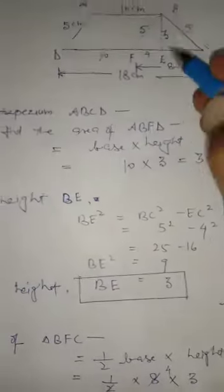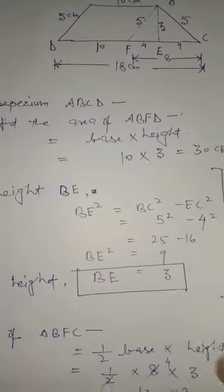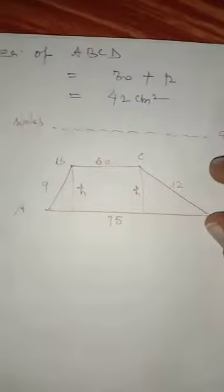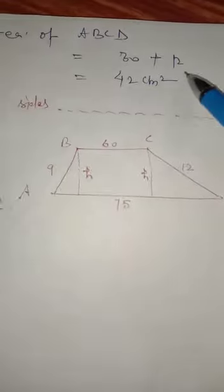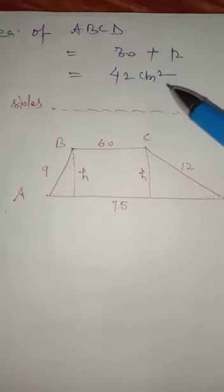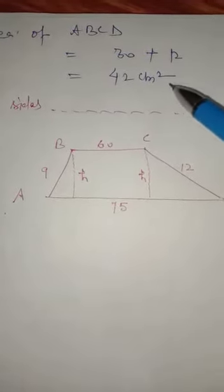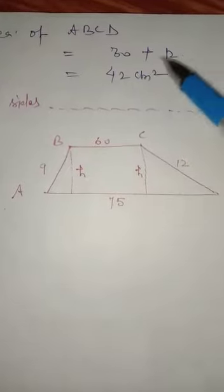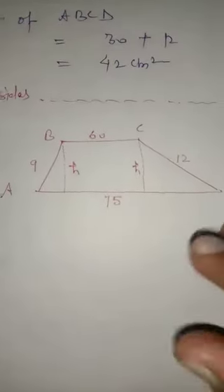Now add the triangle and parallelogram areas to get the full trapezium area. Area of trapezium ABCD equals 30 plus 12 equals 42 cm square. This is the full trapezium area.